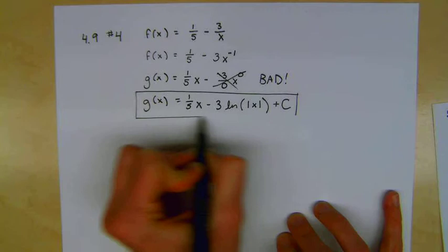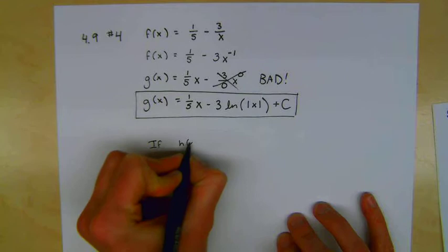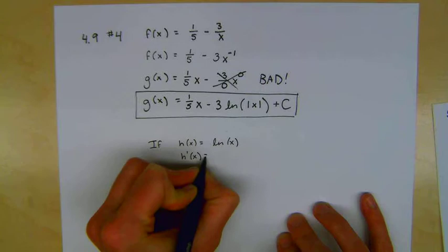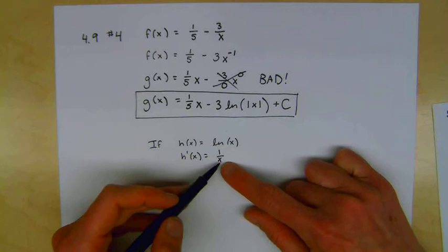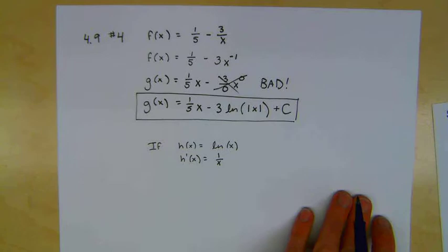That's a good problem. It's a good review of the fact that if h(x) is equal to the natural log of x, then h'(x) is going to be equal to 1 over x. So that means that if I'm taking the antiderivative, any time I have x to the negative 1, I go backwards using natural log.